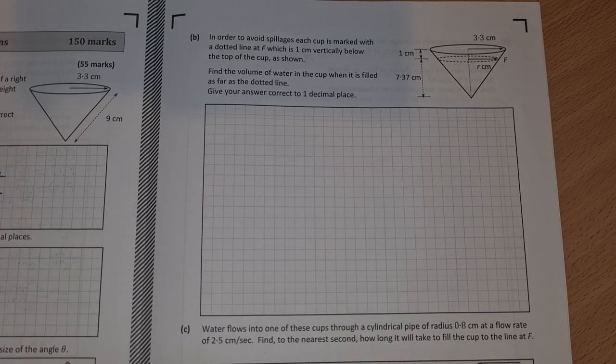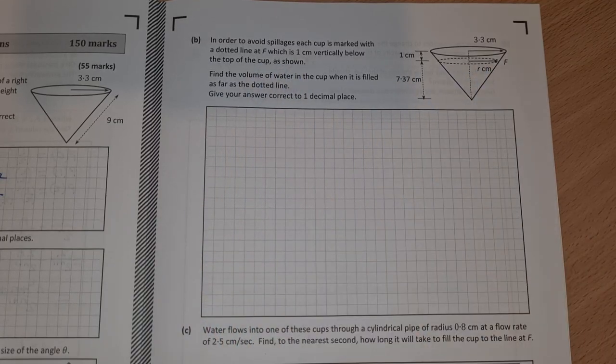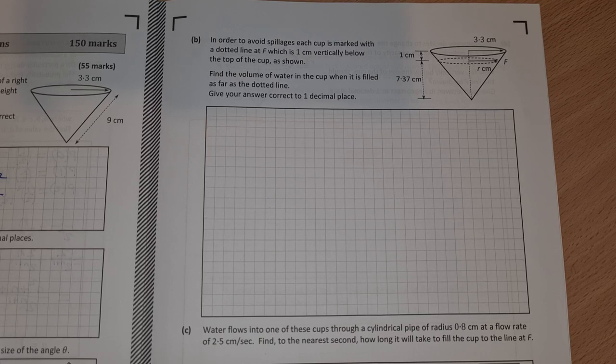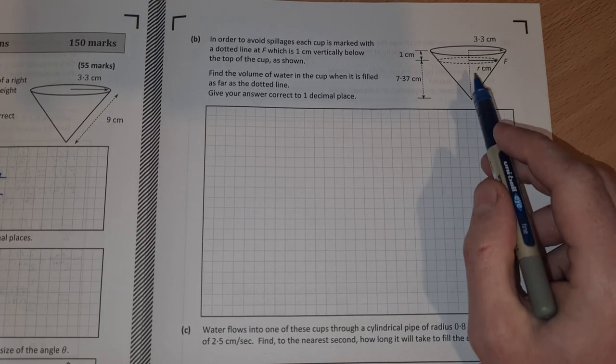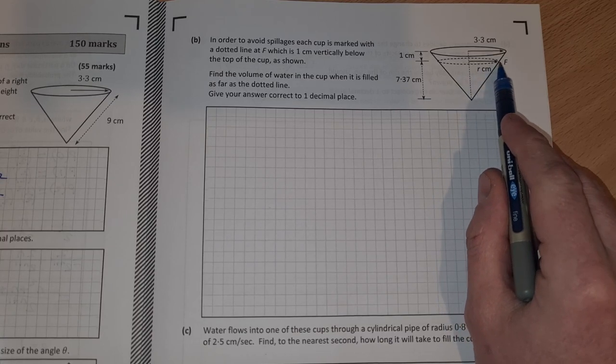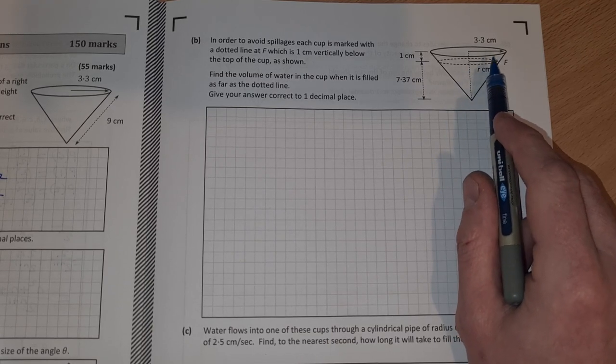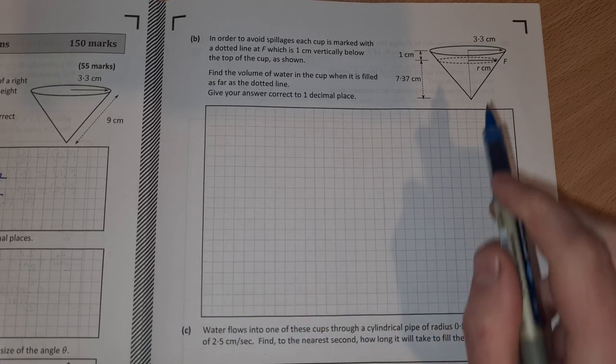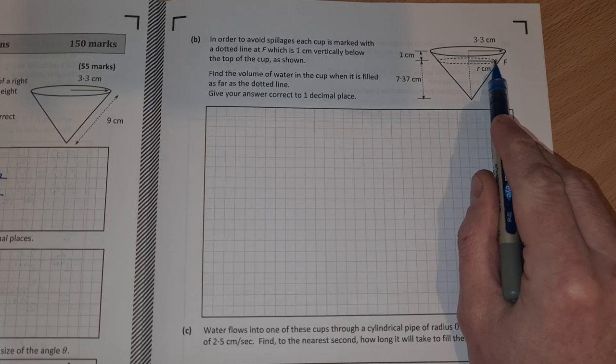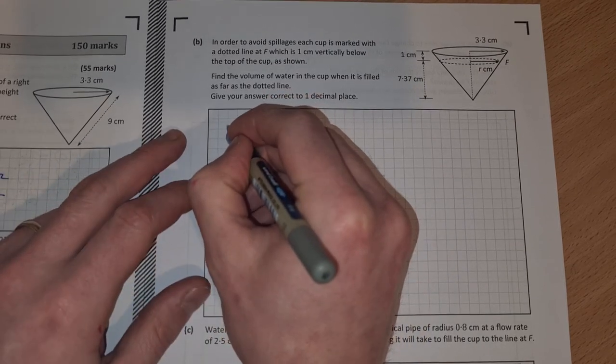Part B. In order to avoid spillages, each cup is marked with a dotted line at f which is one centimeter vertically below the top of the cup. Find the volume of water in the cup when it is filled as far as the dotted line. Give your answer correct to one decimal place. We need to find the radius at this height in order to find the volume because the volume is ⅓πr²h. We know the height is 7.37, so we just need to find that r. To do that we use similar triangles.